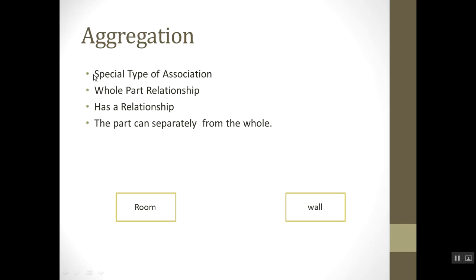The part can separate from the whole. It is a 'has-a' relationship: the whole is the room and the part is the wall. Since many rooms have four walls, it is also a one-to-many relationship — one room has many walls, possibly four or even more.